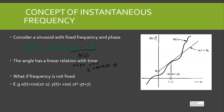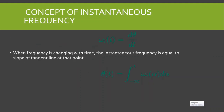But what if the frequency is not fixed? For example, if we have x of t equal to cosine(2t minus 1), the instantaneous frequency is easy to find — it is 2. But what if the angle is not a linear function of time? In that case we must introduce the concept of instantaneous frequency, and to find it we need to use the concept of the derivative. The instantaneous frequency is equal to the slope of the tangent line at that point.